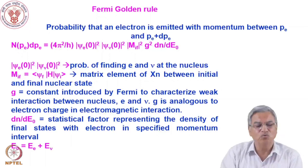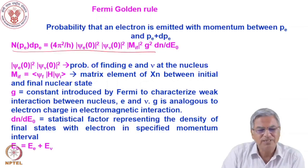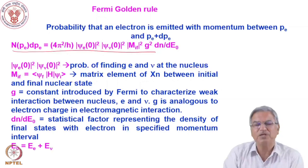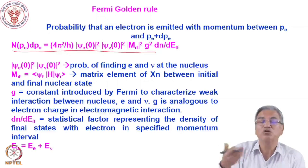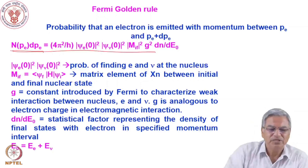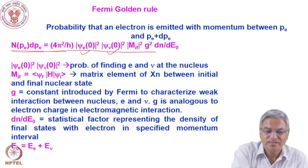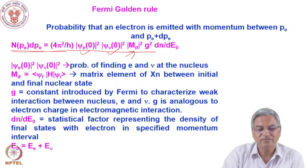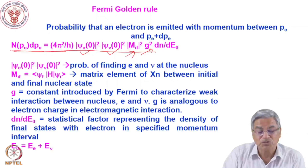Fermi's golden rule for beta decay gives the probability that an electron is emitted with momentum between p_e and p_e + dp_e. This probability N(p_e)dp_e is given by (4π²/ℏ)|ψ_e|²|ψ_ν|²|M_if|²G²ρ(E), where |ψ_e|² and |ψ_ν|² are the probabilities of finding the electron and neutrino at the nucleus, M_if is the nuclear matrix element between initial and final states, G is the coupling constant Fermi introduced to characterize the weak interaction — analogous to electric charge in electromagnetic interaction — and ρ is the density of states.